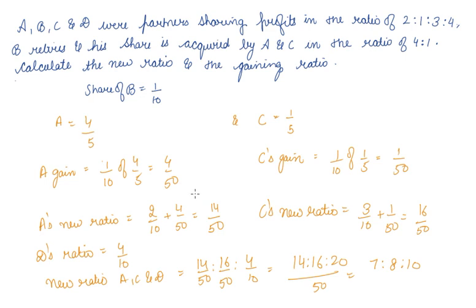Since A and C have acquired B's share in the ratio of 4:1, the gaining ratio will be 4:1 itself. This will be the gaining ratio of A and C.